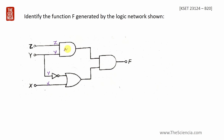For an AND gate, the inputs are y and z, so the output is y·z. For an OR gate with bar notation, we get x OR y-bar. Combining these: the AND gate gives y·z and the OR gate gives x OR y-bar, and the output F involves y·z and y-bar.